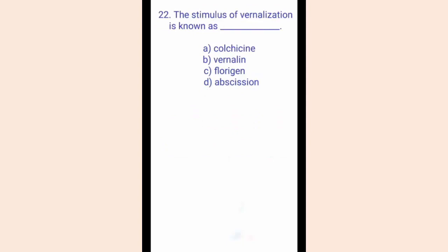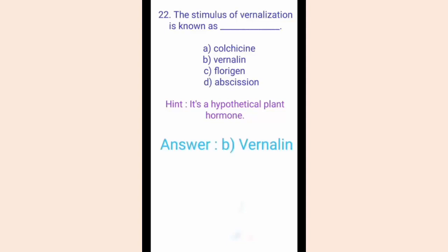Question number twenty-two. The stimulus of vernalization is known as dash. The options are A. Colchicin, B. Vernalin, C. Florigen, D. Abscission. The hint is it is a hypothetical plant hormone. The correct answer is option B, Vernalin. Vernalin is a plant hormone produced during vernalization. Some plants won't bloom without cold treatment or vernalization.